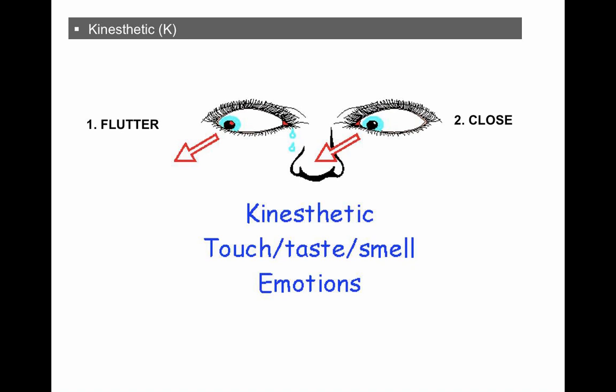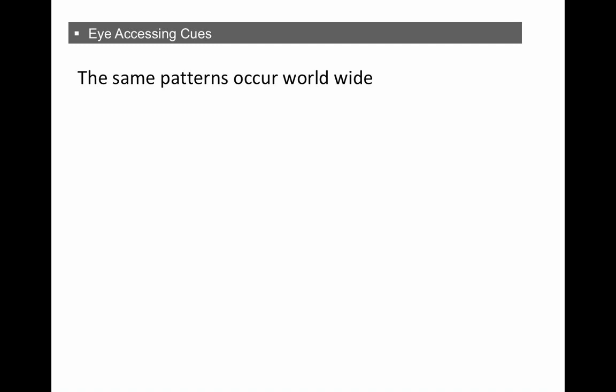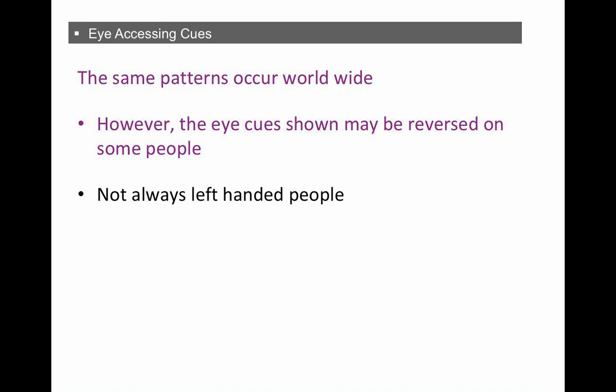And there doesn't seem to be any cultural differences to this, according to studies. And as I said, they may be reversed in some people, but if they're reversed, they'll always be reversed. And it's not linked to left-handed, right-handed people in any way. And if the people are reversed, you have to establish that, and then the eye movements will always be consistent. They will always be reversed.